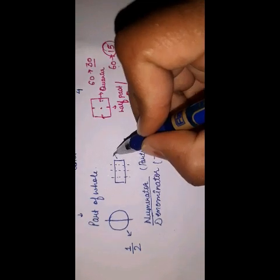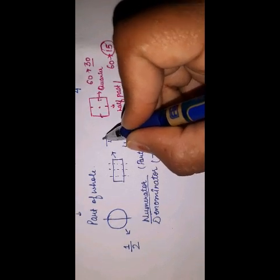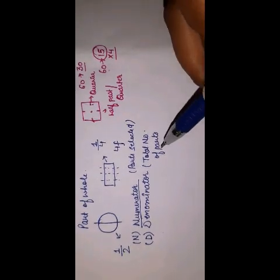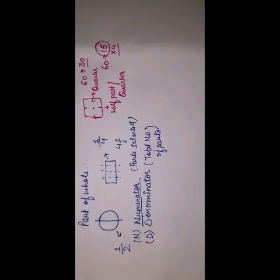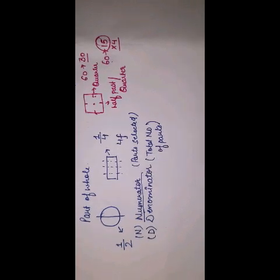We have divided the chocolate bar into 4 parts and you will get 1 out of 4 parts, so we can say that the chocolate I got is 1 fourth. Numerator ko haam represent karte hain N se aur denominator ko D se. Toh jab haam poore ko divide karte hain kitne parts mein, toh denominator kya batata hai ki hamne poore ko kitne parts mein divide kiya, aur unme se jitne parts ko haam select karte hain woh parts kya hote hain numerator. Aur numerator aur denominator ko haam kis se alag karte hain — dividing line se.